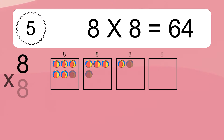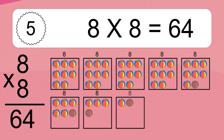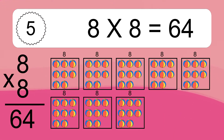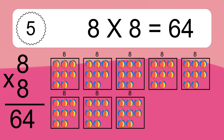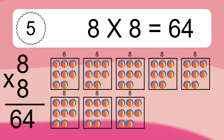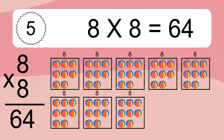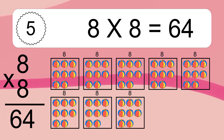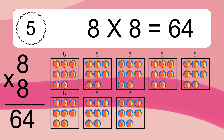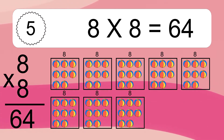This equals 42 balls. 8 times 8 equals what? 8 times 8 equals 64. We have 8 boxes, and each box has 8 colorful balls inside. If you count all the balls in all the boxes together, you will have 8 times 8 balls. This equals 64 balls.